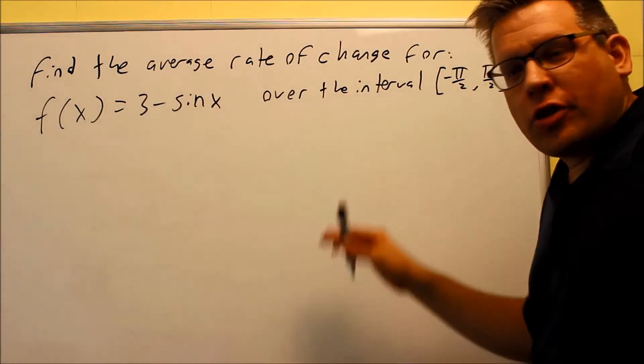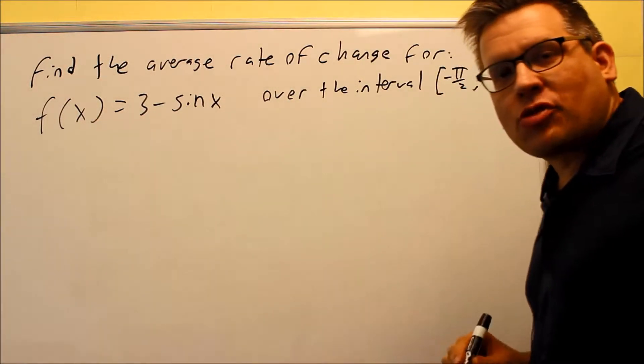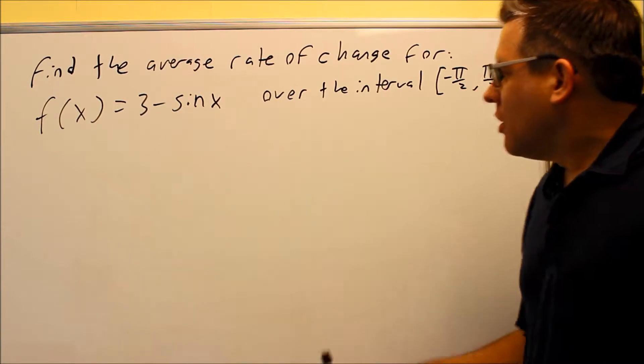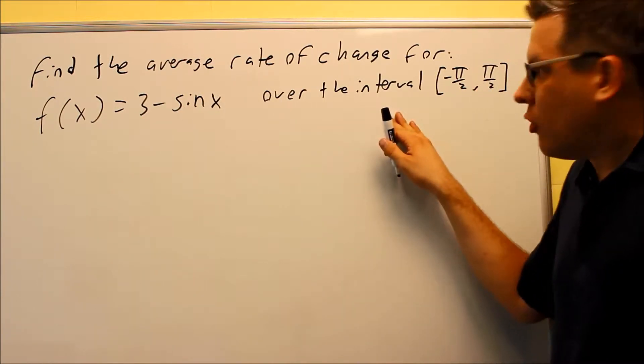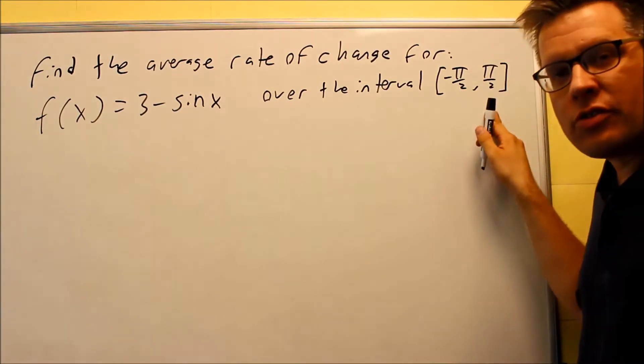Next we want to find the average rate of change. F of x this time is 3 minus sine x, and it says over the interval negative pi over 2 to pi over 2.